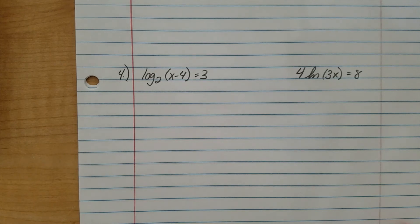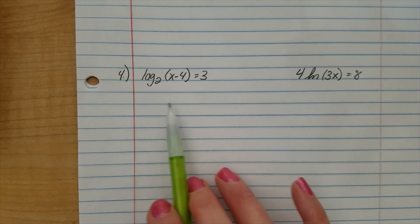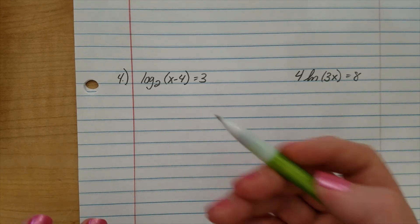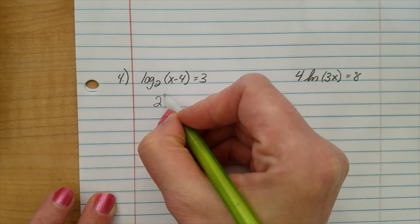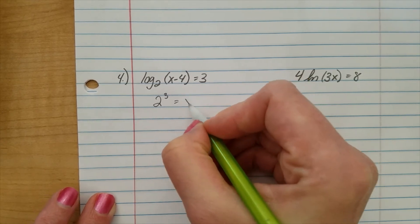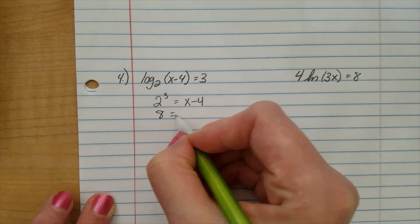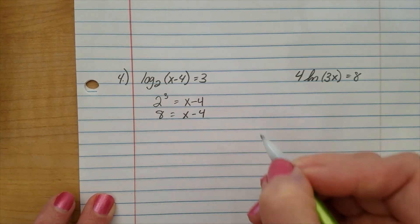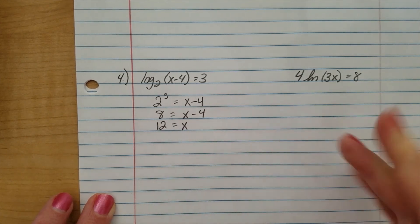Let's take a look at these. Here, on both of these, what we're going to do is we're going to move them into exponential form. They'll be nice and easy to solve. Let's see. Base is 2. Exponent is 3. Argument. x minus 4. Well, 2 to the third is 8. x minus 4. We'll add 4 to both sides. 12 equals x.